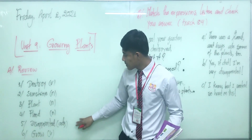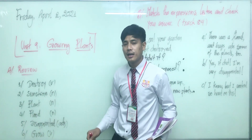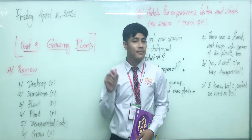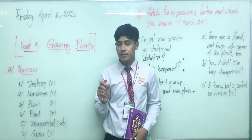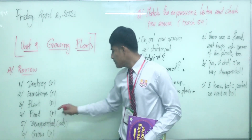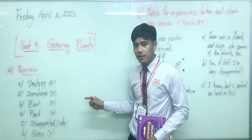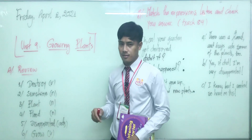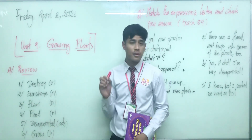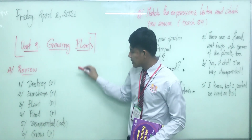Number five: 'disappointed' functions as an adjective and means sad or unhappy. The last one, number six: 'grow' functions as a verb and means to become bigger. That's all for the vocabulary — hope you caught up with the meaning of all these words.